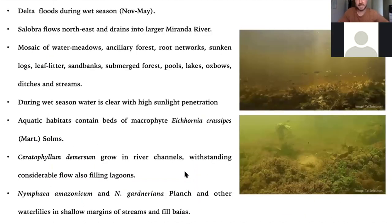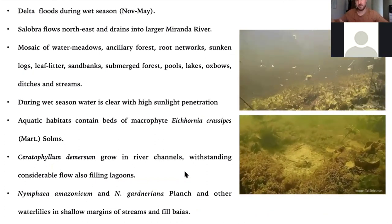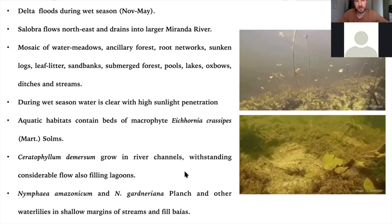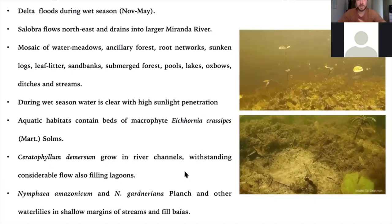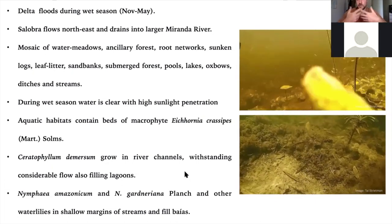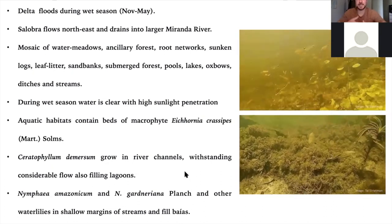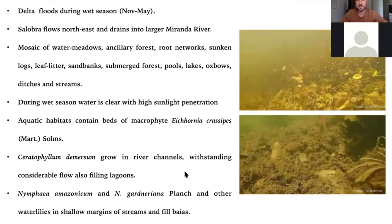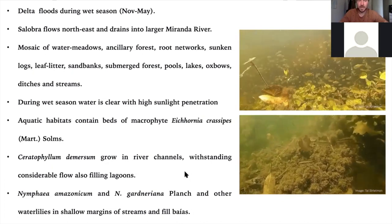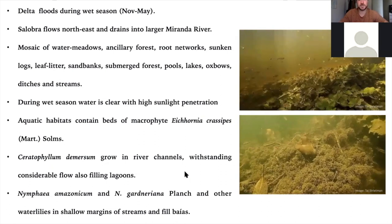The wet season runs roughly from November to May. The Salobra flows northeast and drains into the larger Miranda River, flooding the whole region. Along the course of the Salobra, oxbow lakes, water meadows, and forests form complex habitats with lianas, sunken roots, sunken logs, temporary ponds, ditches, and small drainage streams. During the wet season, water is quite clear with good sunlight penetration, supporting lots of aquatic vegetation.